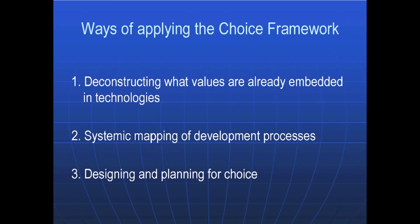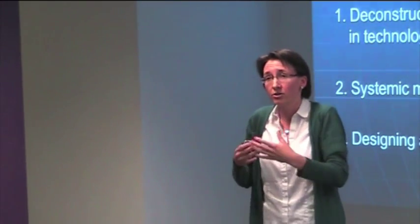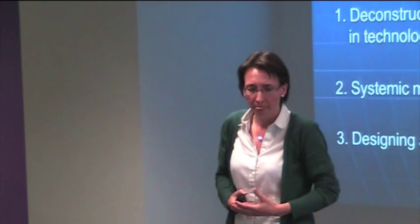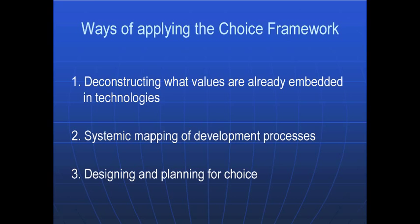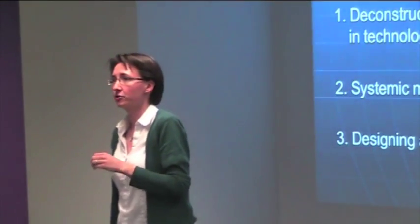How might this be applied? It's a question of starting to deconstruct what values are embedded in technologies, asking how much freedom of choice individuals have when they engage with technology. It could be a systematic mapping of development processes — actually using this as a form of checklist — and indeed, potentially most challenging, designing and planning for choice.